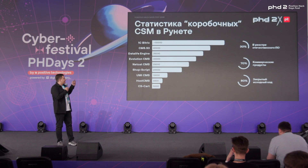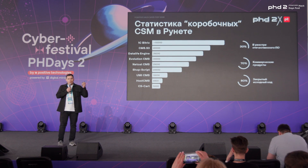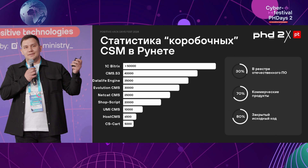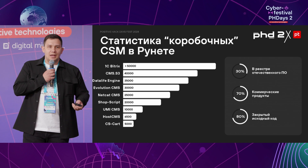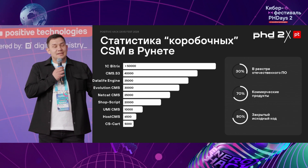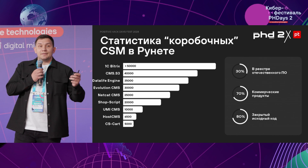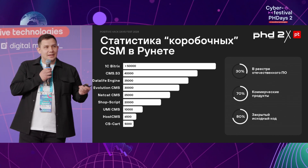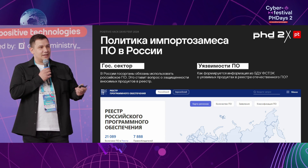CMS.ru — what are they and where do you look for them? Well, the first thing that comes to mind is Bitrix, but it's not that straightforward. There are lots of other CMSs, and most of these products are out of the box, with 30% of them on the register of domestic software.